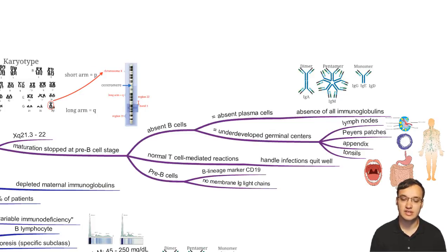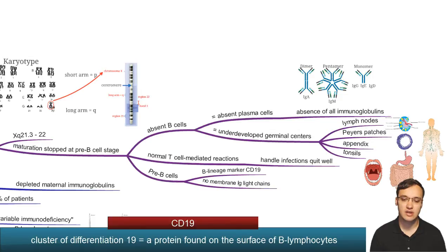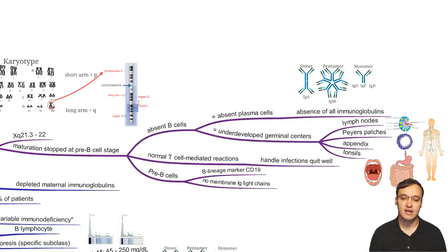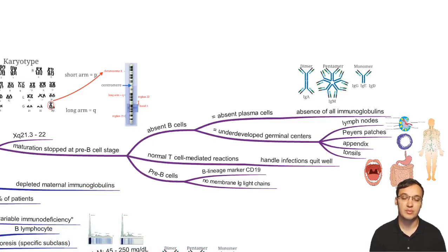The common places with germinal centers include tonsils, appendix, Peyer's patches, and lymph nodes. T cells are normal in numbers and will try to compensate for the B cell defect, handling infections by themselves. In the lab, the pre-B cells will have the CD19 marker, which is typical for B lymphocytes, but the immunoglobulin light chains will be absent, confirming the maturation defect and the Bruton tyrosine kinase problem.